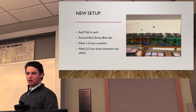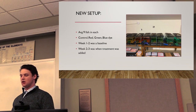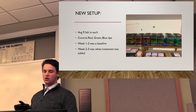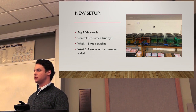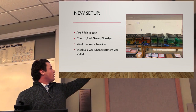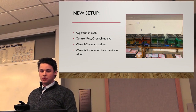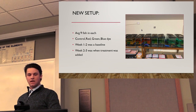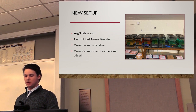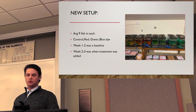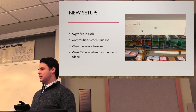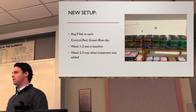My new setup consisted of eight tanks with an average of nine fish in each. Some had a little over nine, some a little less, but each had a correlating number of fish so results wouldn't be skewed. I had my control — pictured to the far left here — and then red, green, and blue tanks, all filled with food coloring dye. Week one to two was a baseline for my experiment: the fish were all under the exact same conditions with no dye added, fed the exact same amount of food, with the exact same air and tank setup.